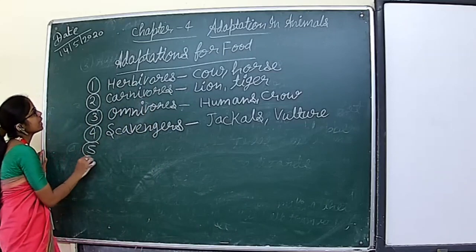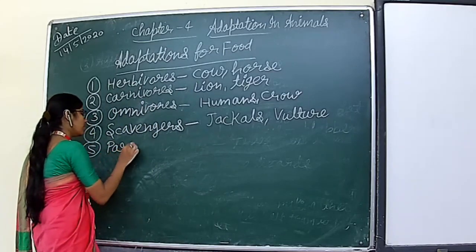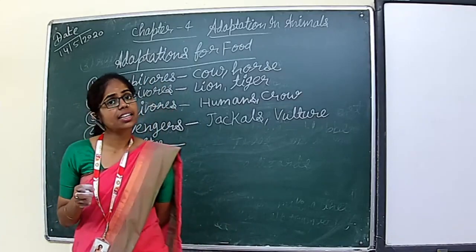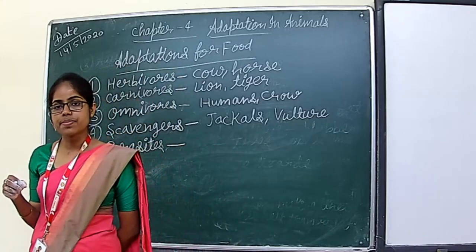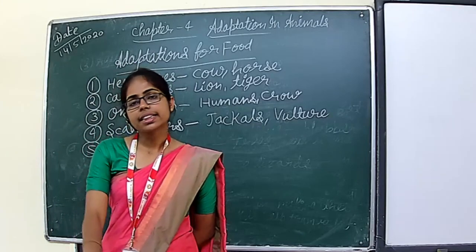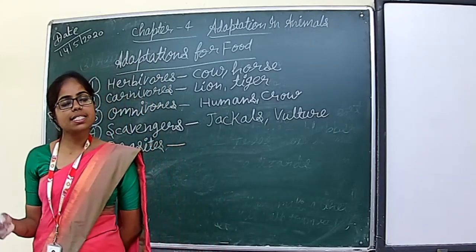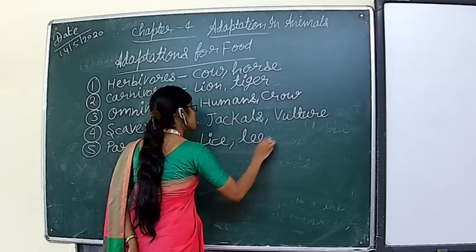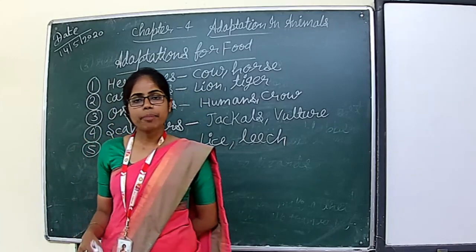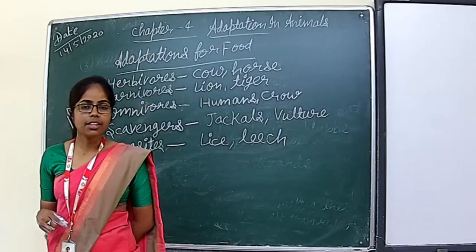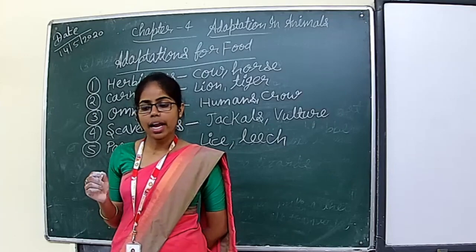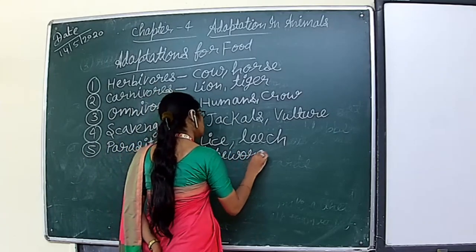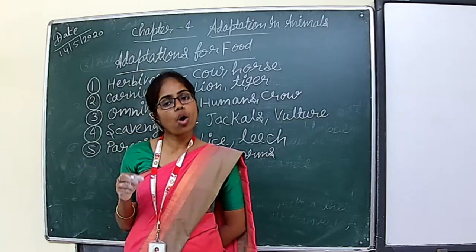The last categorization based on adaptation for food is parasites. Parasites are those animals that get their food from other living organisms. They live either on the body or inside the body of an organism. Examples include lice and fleas, which live on the body, while tapeworms, roundworms, and hookworms live inside the host body.